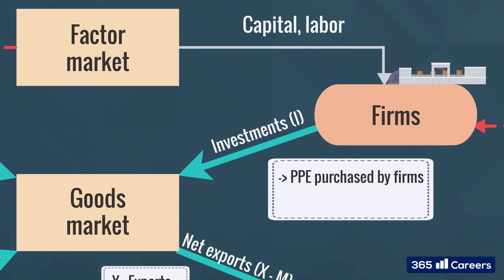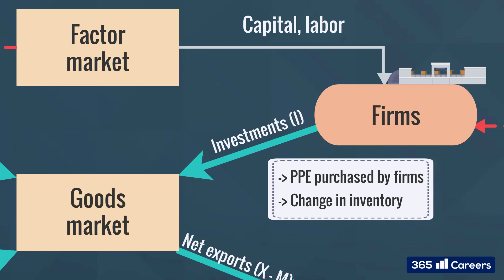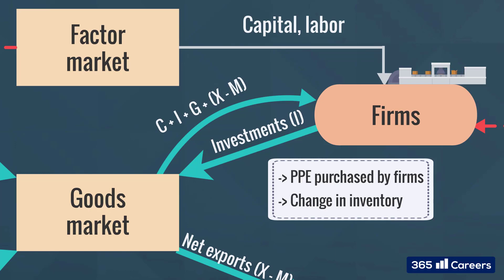Only expenditures made by companies are considered here — individuals do not play a role when it comes to investments. Any changes in inventories also generate productive capacity for firms. So when we see the term investments, or I, we must bear in mind that all property, plant, and equipment purchased by firms, and the increase in inventory levels, are its major components. The revenue received by firms from the goods market is the sum of total household consumption, investments, government spending, and net exports.